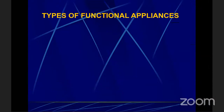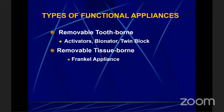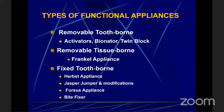What are the various types of functional appliances? You have removable tooth-borne appliances like activators, bionators, and twin block. You have removable tissue-borne appliances like the Frankel appliance. And then you have fixed tooth-borne appliances like the Herbst, Jasper Jumper, Forces, Bite Fixer, and many more. The basic concept remains the same.